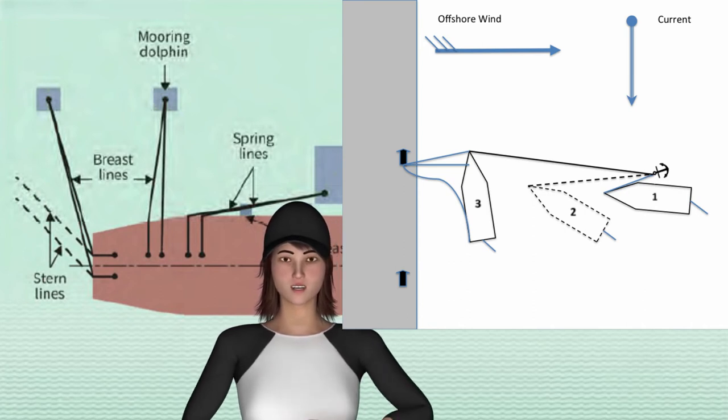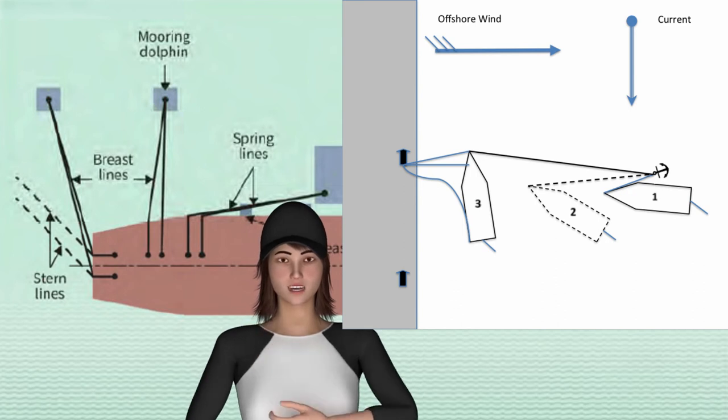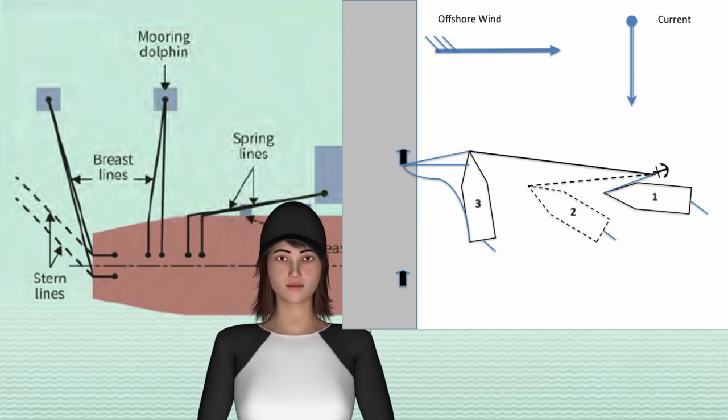When bow is fast ashore, swing stern towards jetty using engines and rudder until weight is transferred to stern rope.